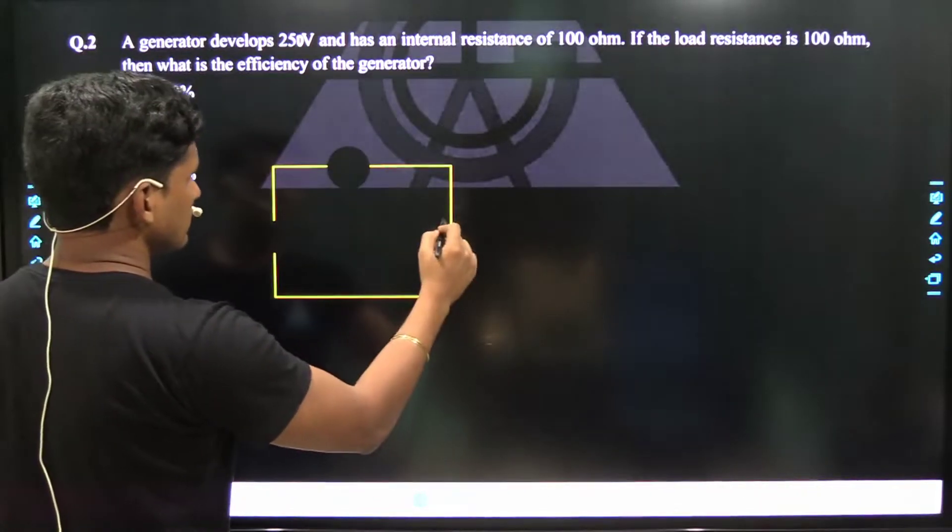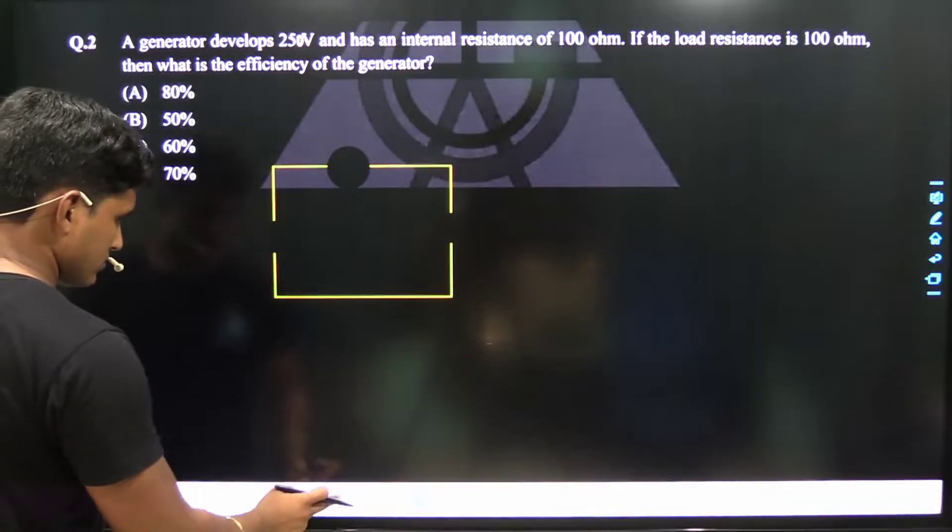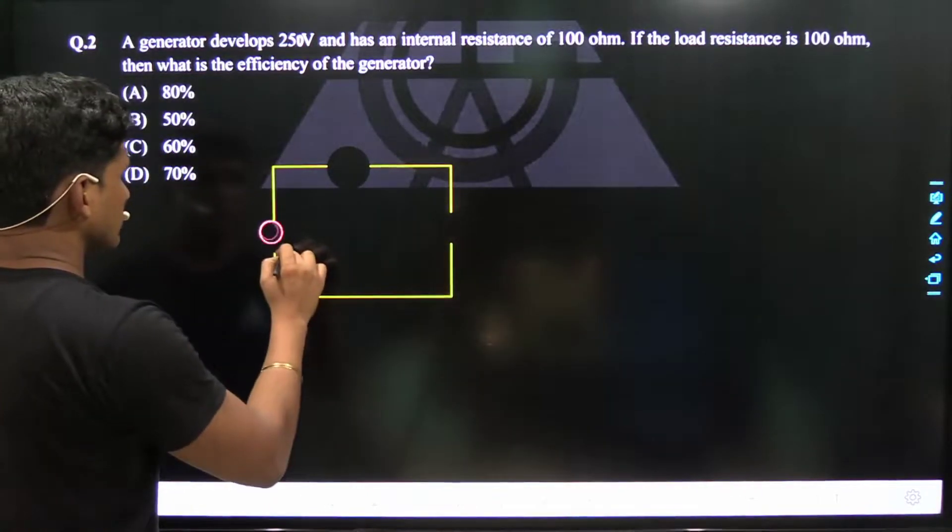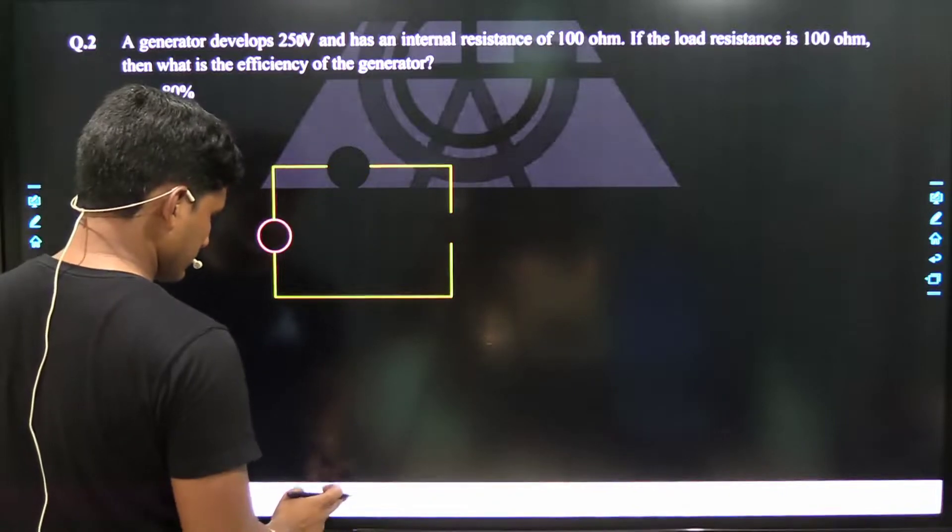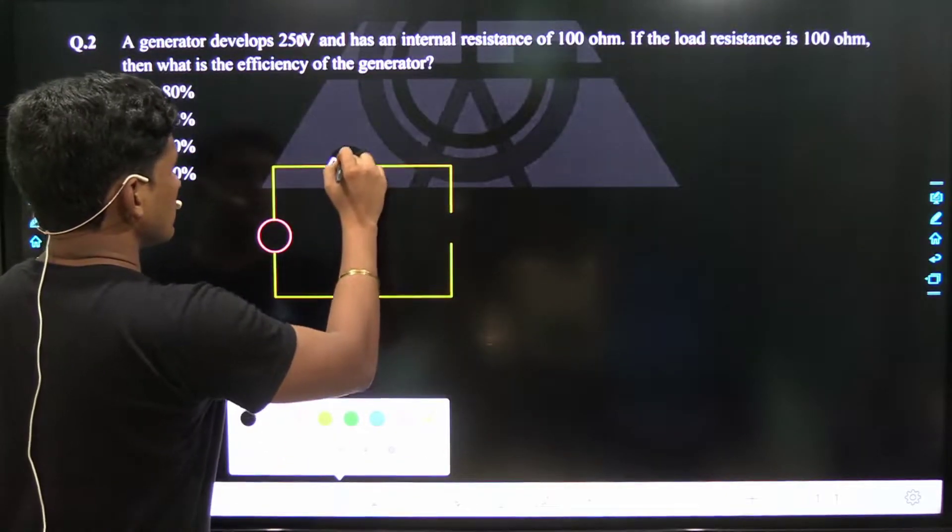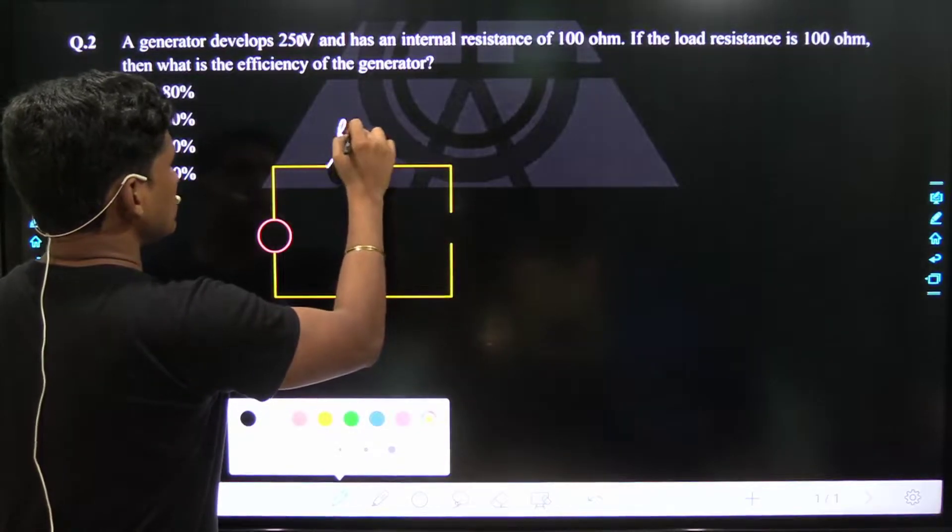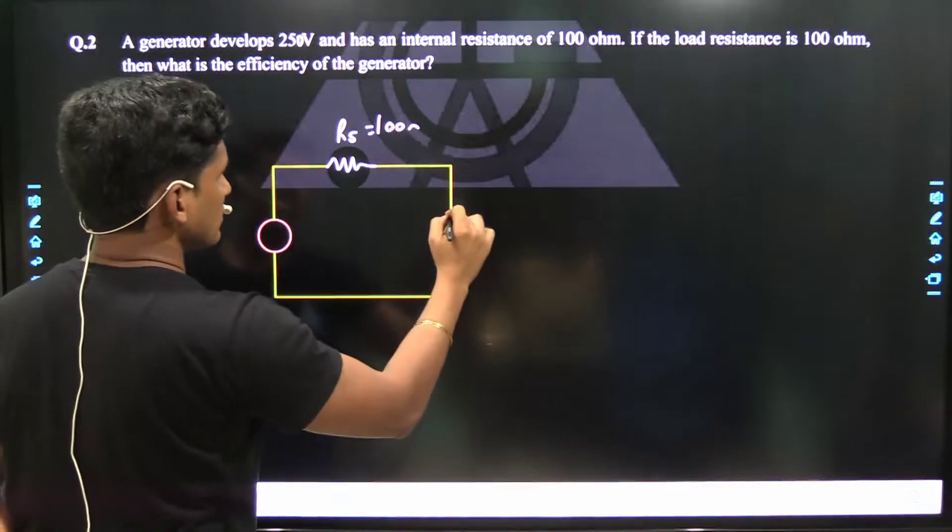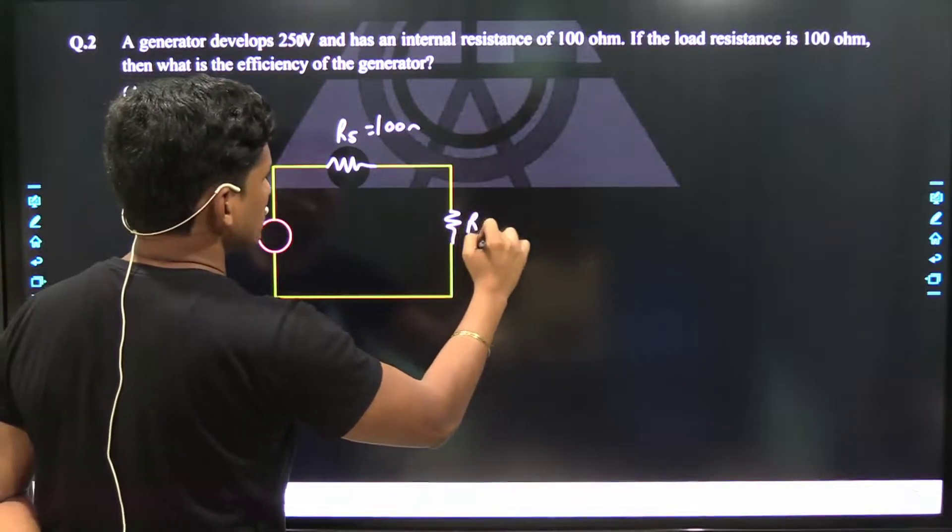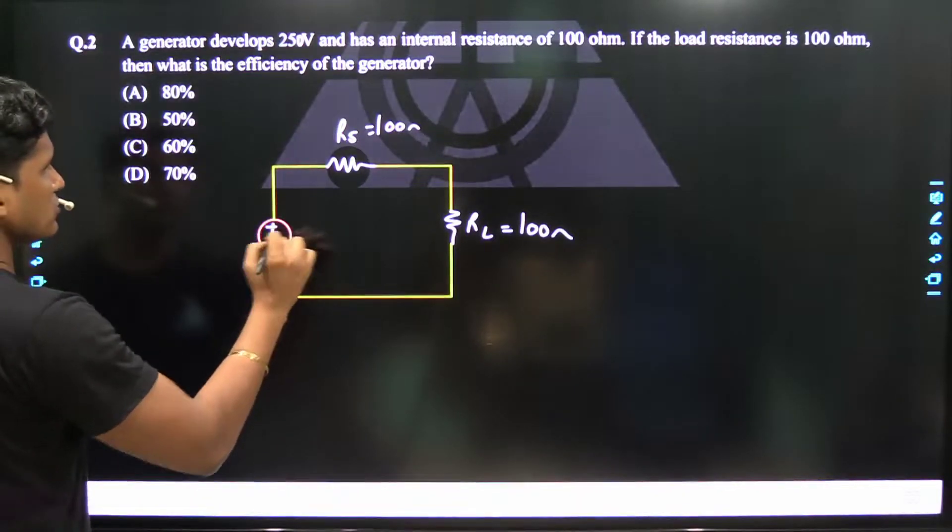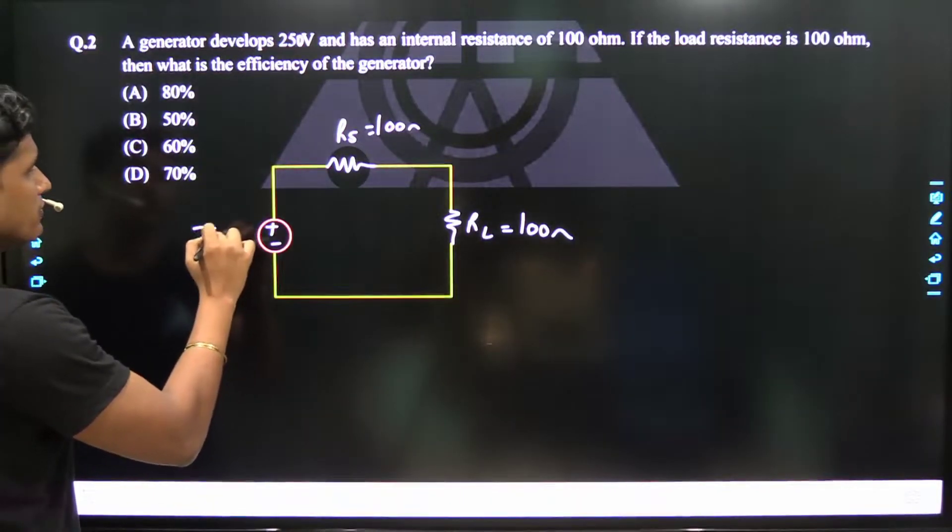This is the generator. This is the voltage. This is the source resistance, that is internal resistance of 100 ohm. Here is the load resistance that is equal to 100 ohm. You have a source voltage that is equal to 250 volt.